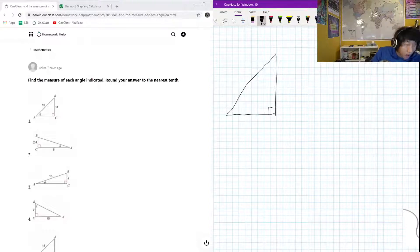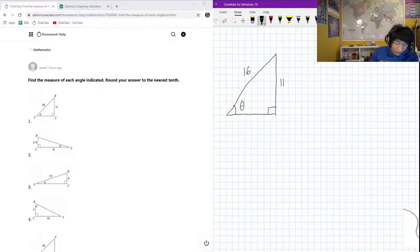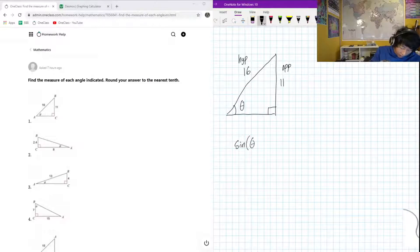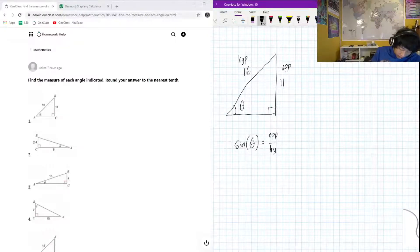Here we have this length of 11, this is 16, and we're looking for this angle here. As we can see, this is going to be the opposite and this is the hypotenuse. So if we wanted to find the angle, we can think back to SOHCAHTOA and we know that sine of the angle is going to be equal to the opposite over hypotenuse, in this case 11 divided by 16.